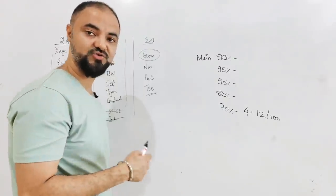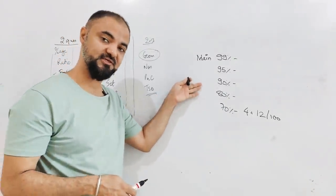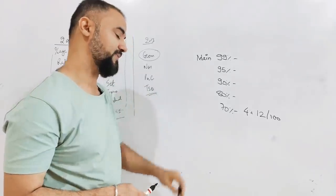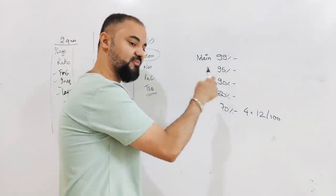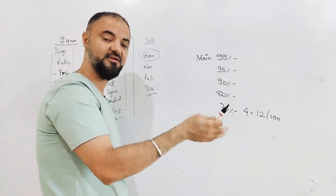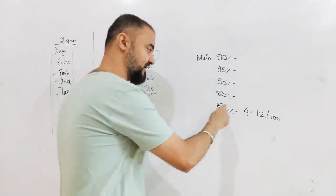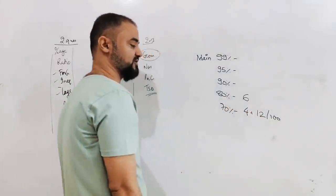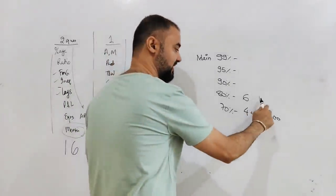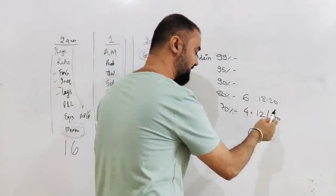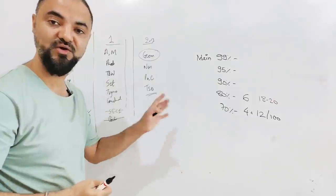New IIM calls - for those who are bad in math, your target should be 80 percentile because new IIM calls will come at 80 percentile in quant. Obviously, do better in other sections as well. And 80 percentile is only six questions correct, which is around 18 marks. 18 to 20 marks and you are getting 80 percentile, you are getting new IIM calls.